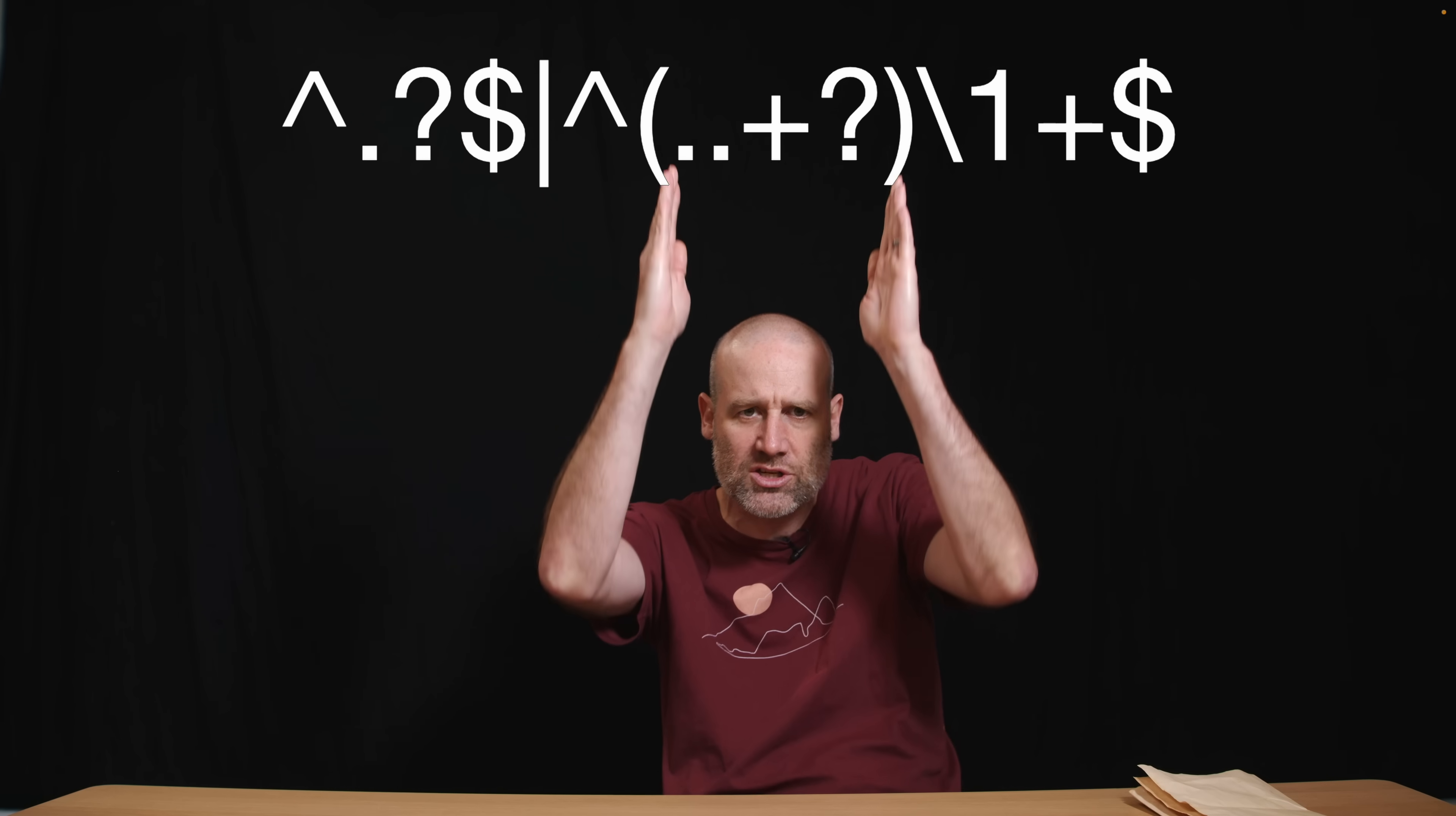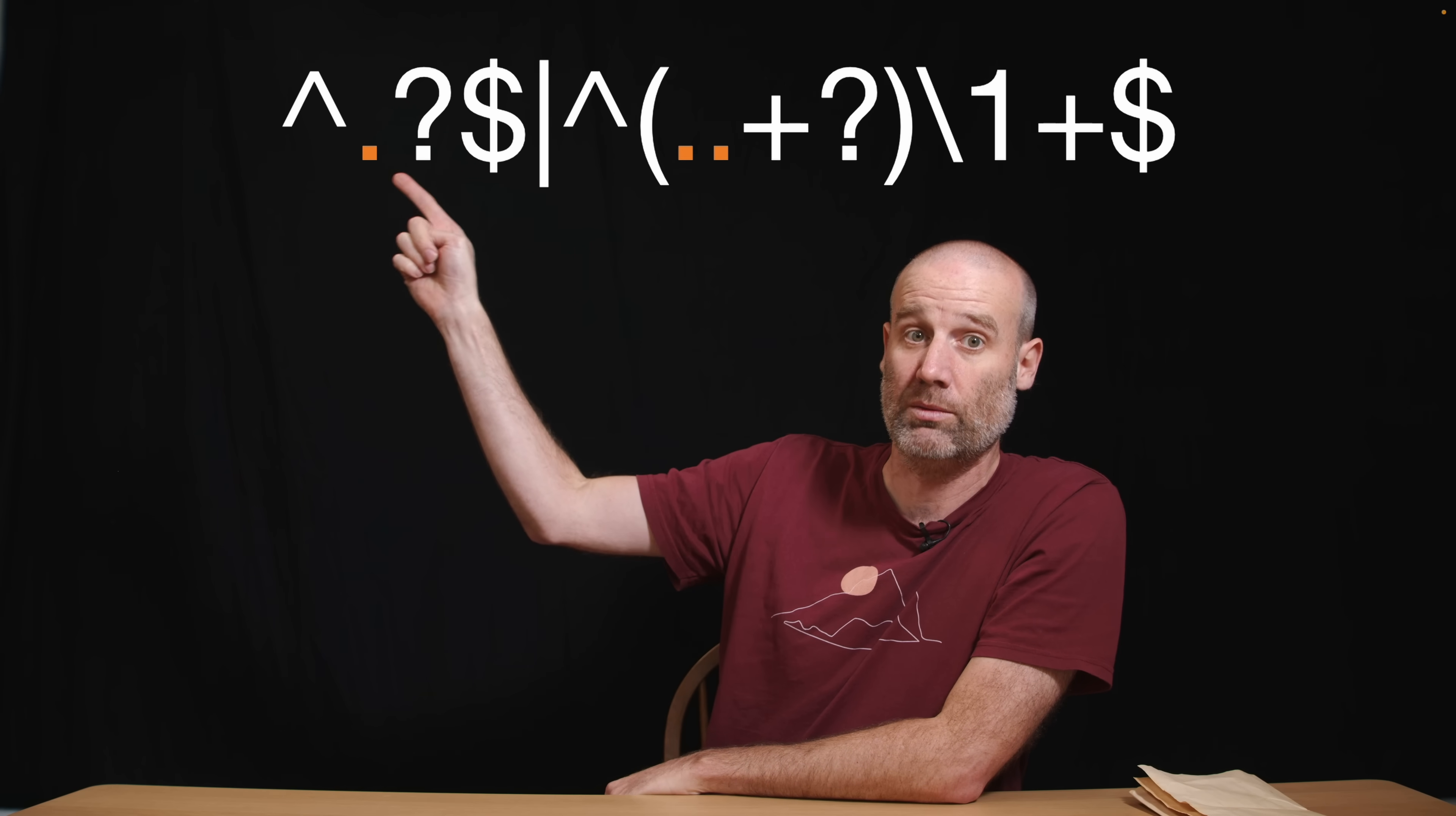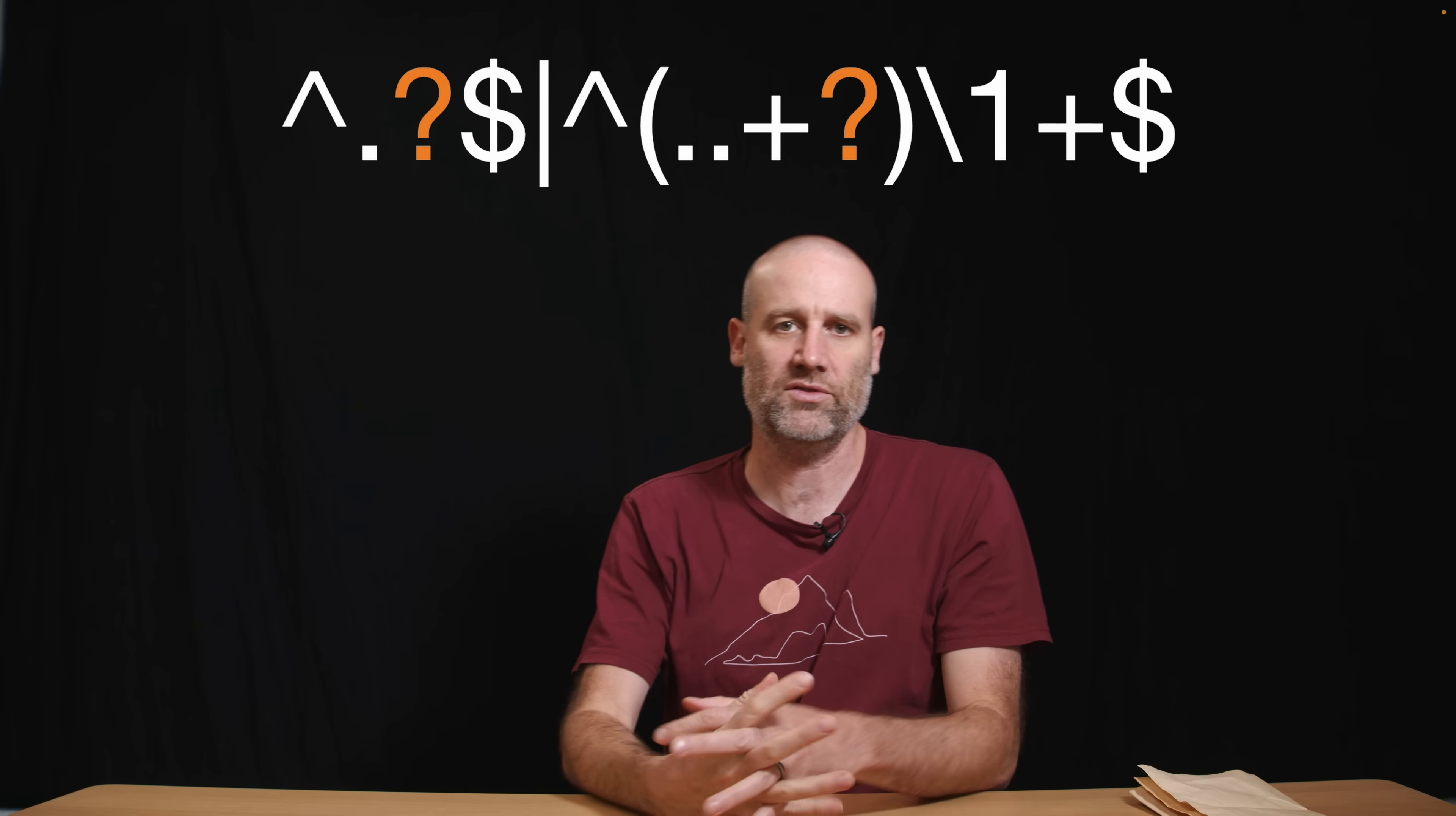We're going to start just with this section right above me there, the dot dot plus question mark. So there's three symbols there we need to understand. What are the dots doing? What is that plus symbol up to? What does it represent? And what is that question mark? So we'll do those three symbols first.